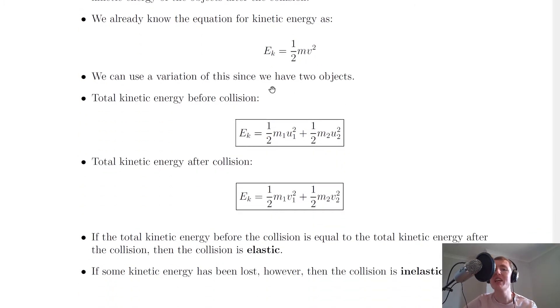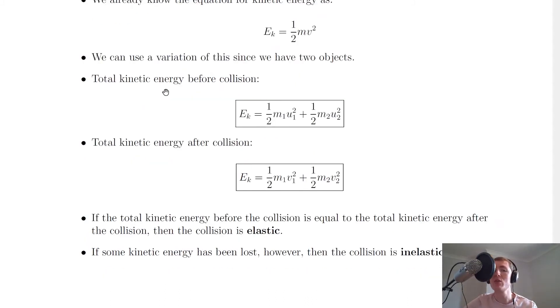We can use a variation of this since we have two objects, so we're going to introduce the subscripts of 1 and 2. The total kinetic energy before a collision is given as Ek equals a half m1 u1 squared plus a half m2 u2 squared, where m1 and m2 are the masses of our objects 1 and 2 respectively, and u1 and u2 are the initial velocities of our objects 1 and 2 respectively.